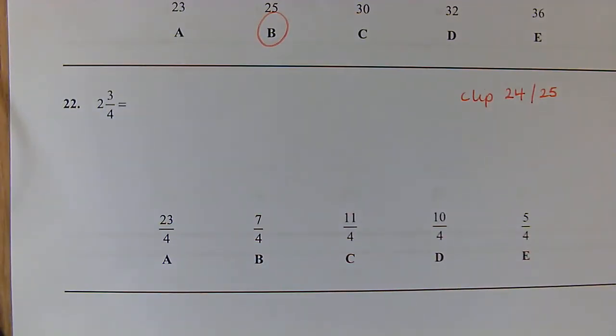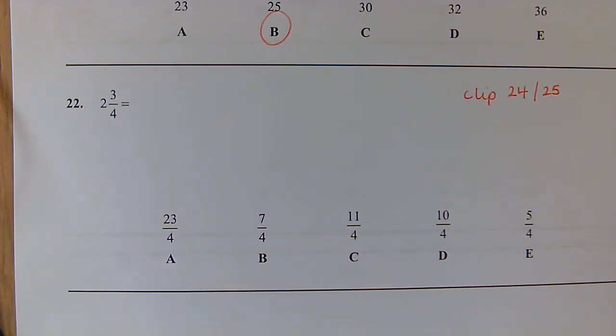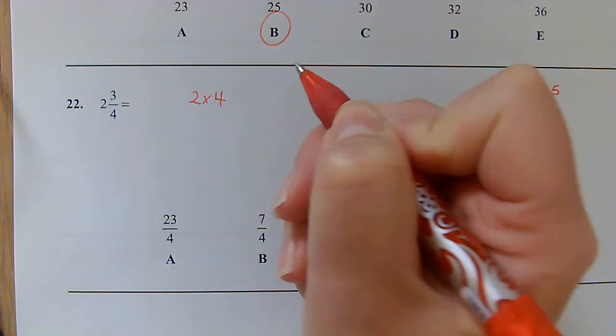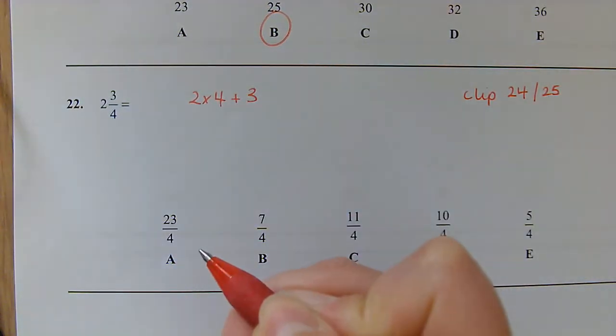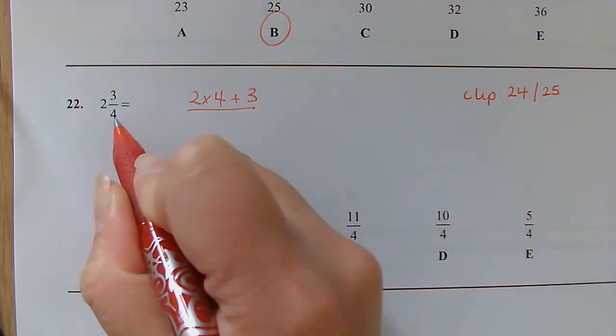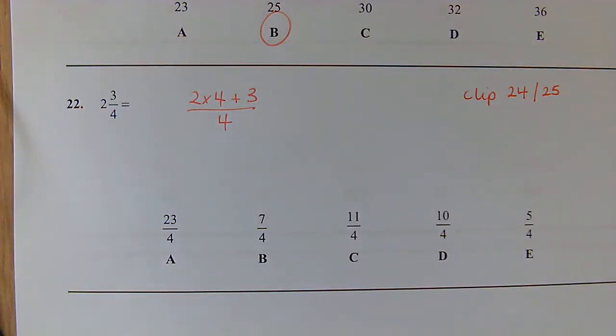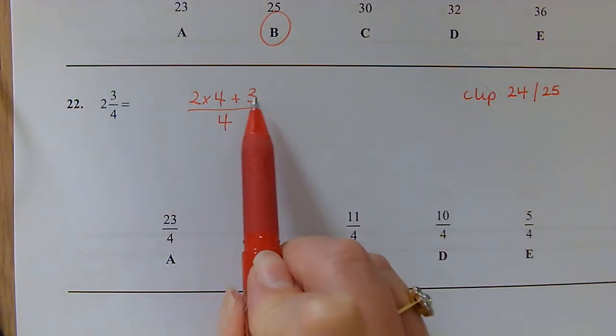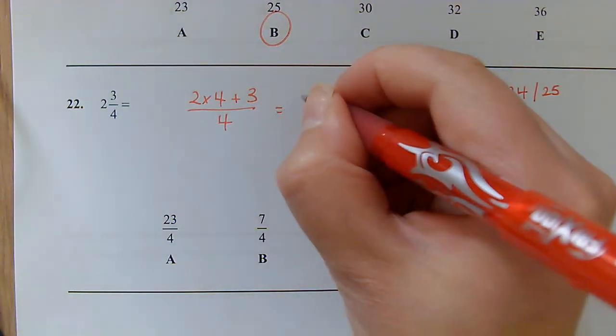Question 22: We've got a mixed number here. We want to change that into an improper fraction. So in order to do this, we need to do our 2 multiplied by 4 and then add on our 3, and then that's all going to be over the same denominator of 4. So 2 multiplied by 4 is 8, plus the 3 gives us 11 over 4.